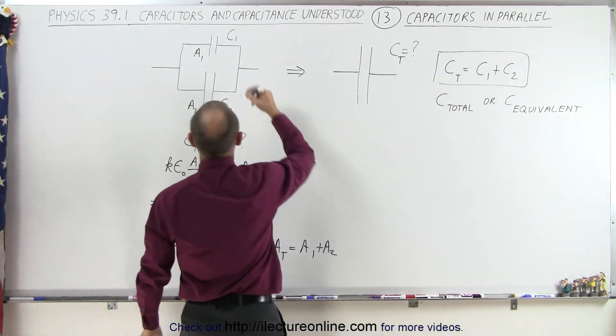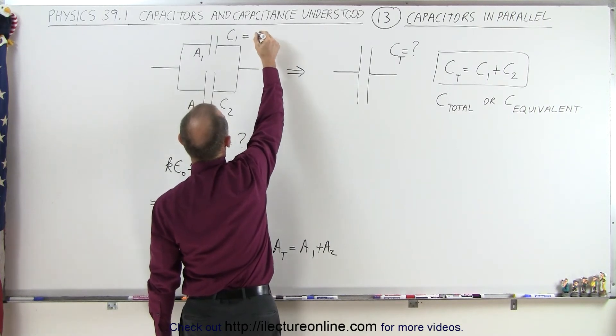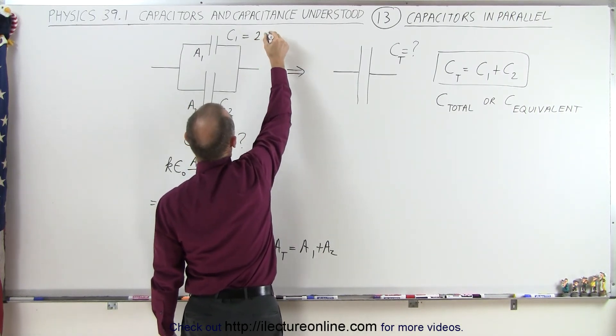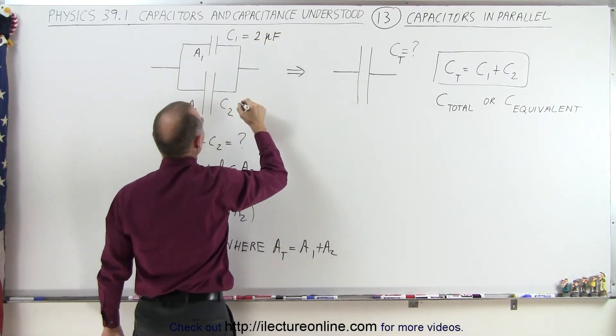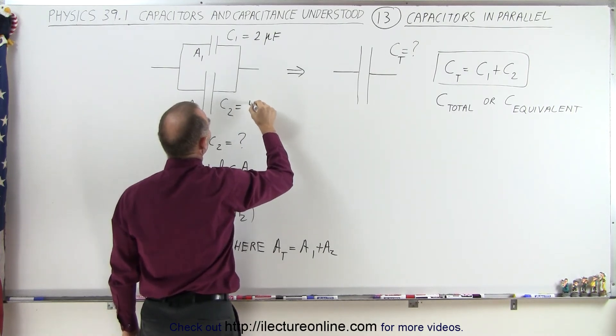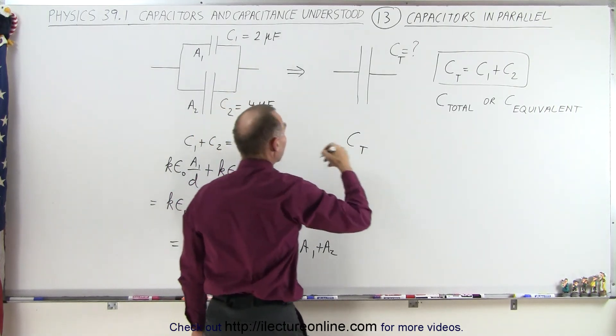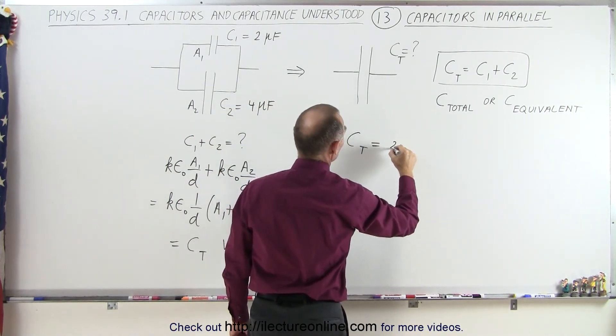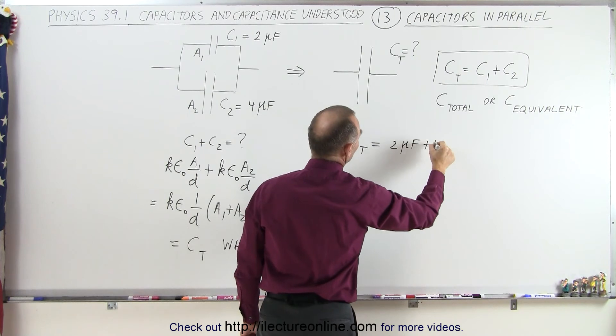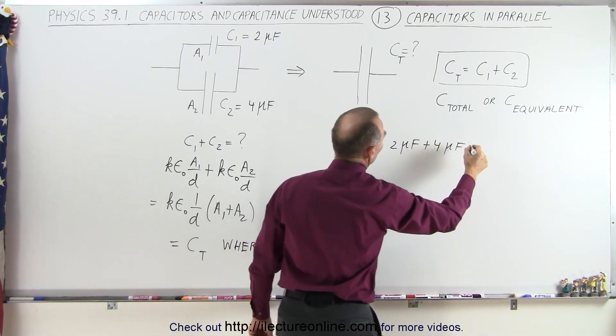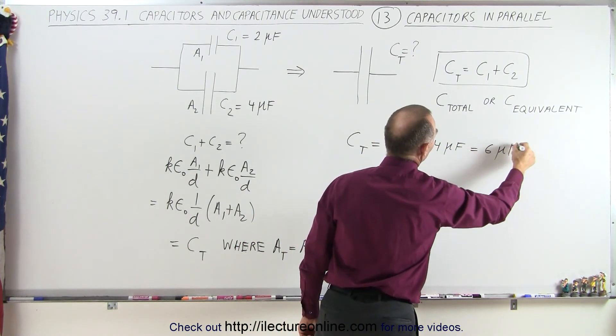So for example, if this was a capacitor equal to two microfarads, and this is a capacitor equal to four microfarads, then the total capacitance when we connect them in parallel would be equal to two microfarads plus four microfarads, which equals six microfarads.